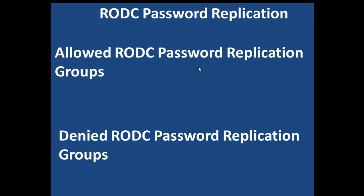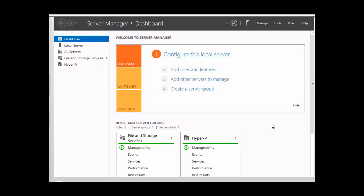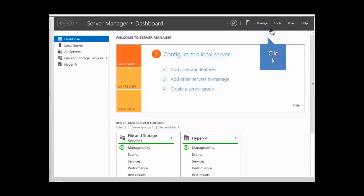Let's take a look. We're going to install the RODC and go into Active Directory to look at those groups. These groups can also be added during installation. To add an RODC to a domain, we need to have a writable copy of a domain controller already existing in the domain. So we're going to go to Manage, then Add Roles and Features.